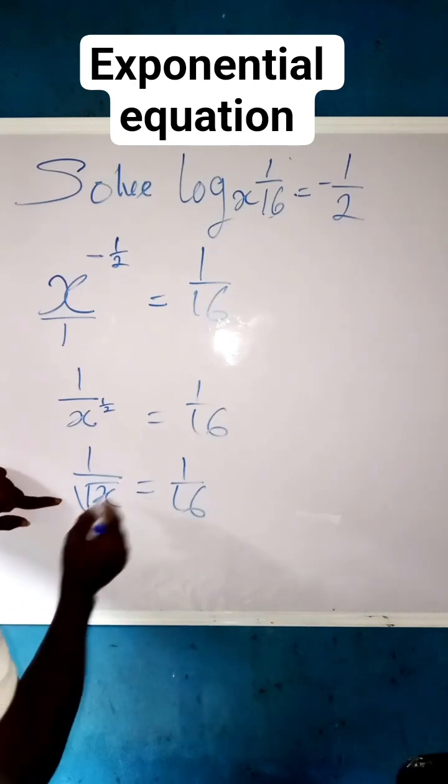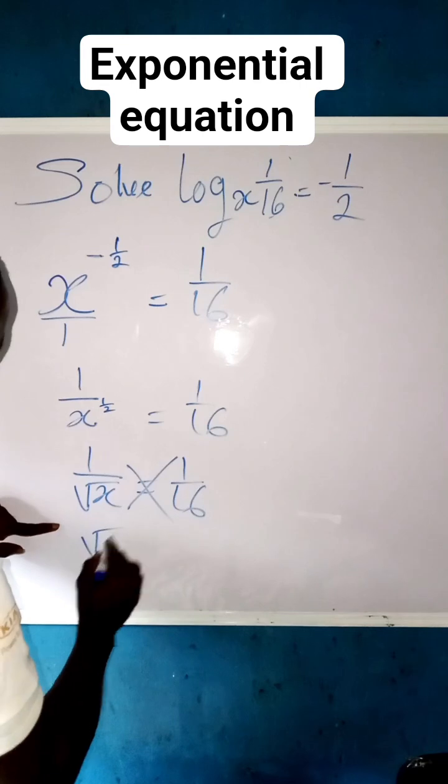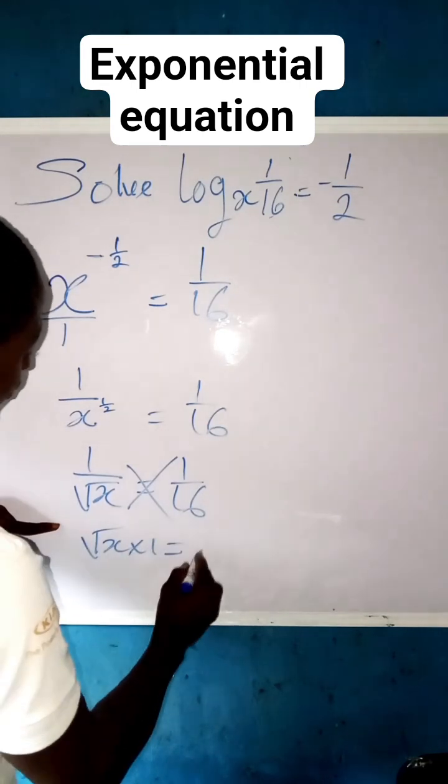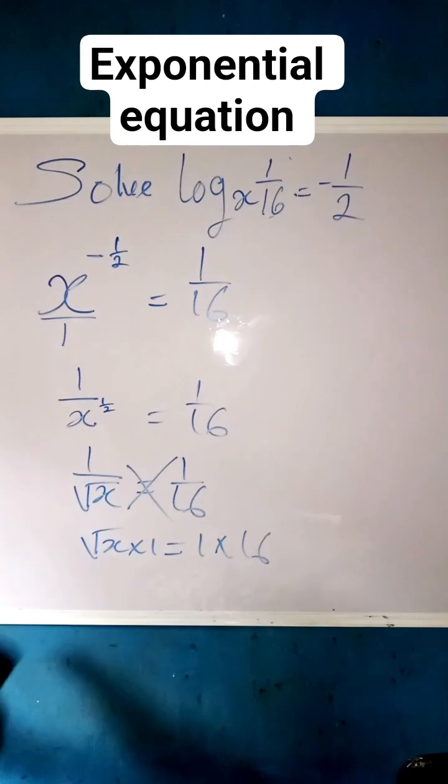Now what we're doing next is to cross multiply, so that we have root x times 1 equals to 1 times 16.